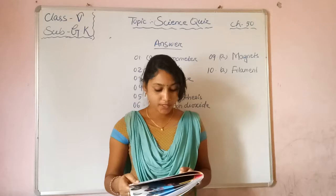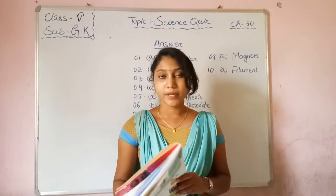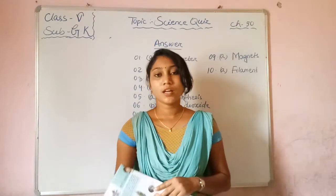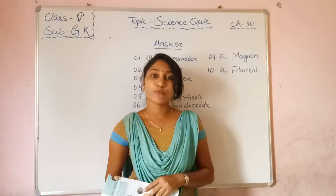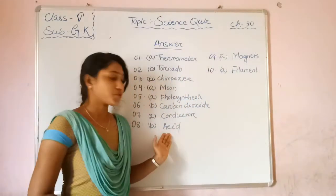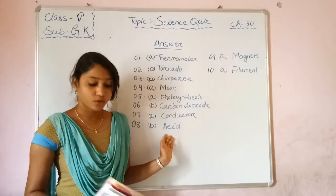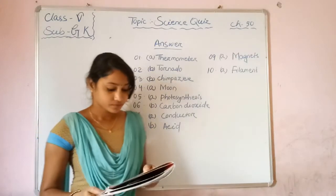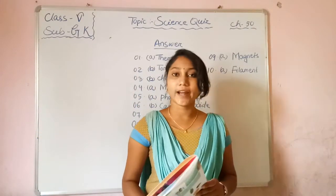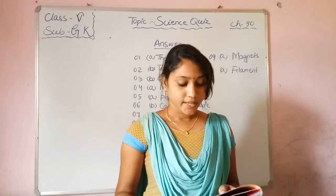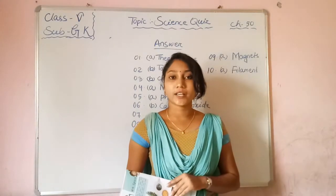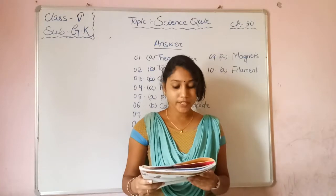Next question: Acid rain is made up of water and? Option A — more, Option B — acid. The correct answer is Option B — acid. Acid rain is made up of water and acid.